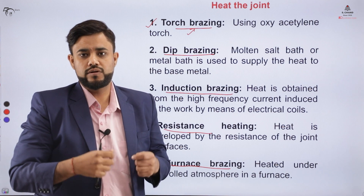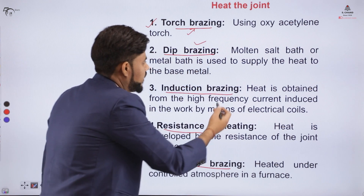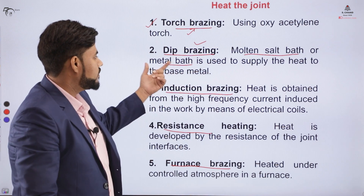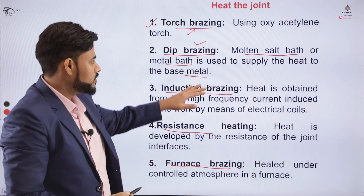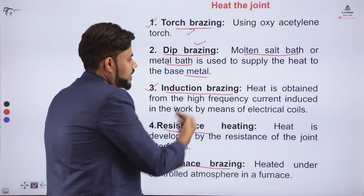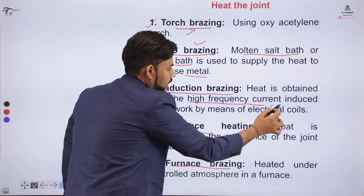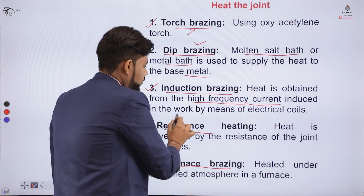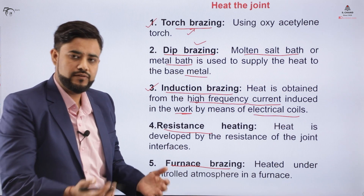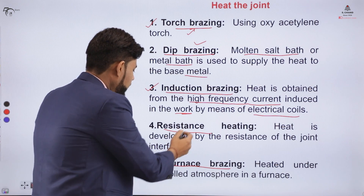In torch brazing, an oxy-acetylene torch combining oxygen and acetylene is used to heat the surface of the workpiece. In dip brazing, a molten salt bath or metal bath supplies heat to the base metal to heat the joint. In induction brazing, heat is produced with the help of high-frequency currents induced in the workpiece through electrical coils, which heat the surface.